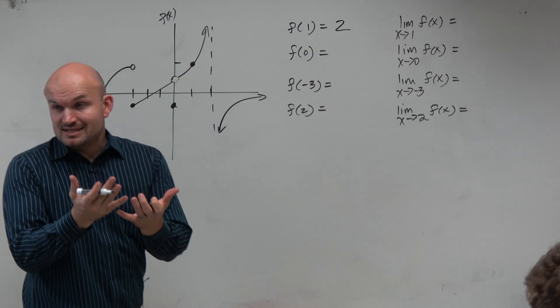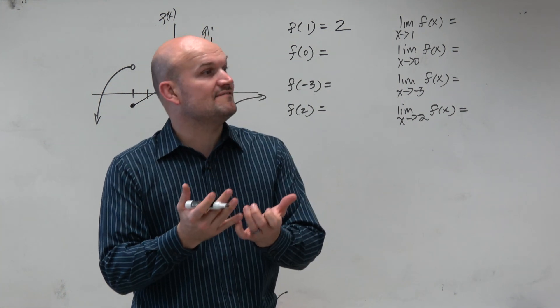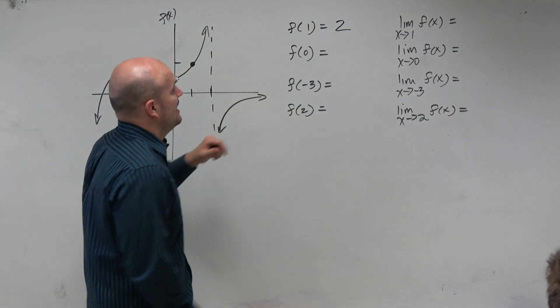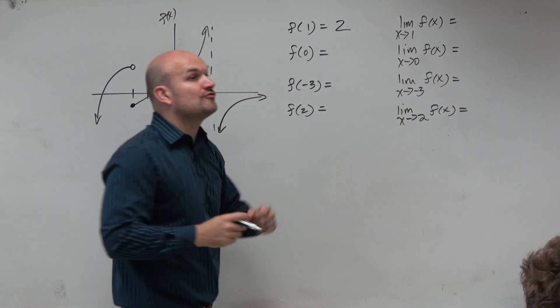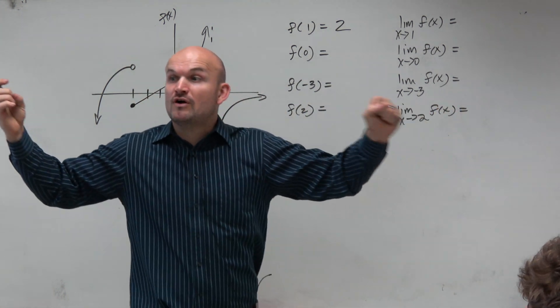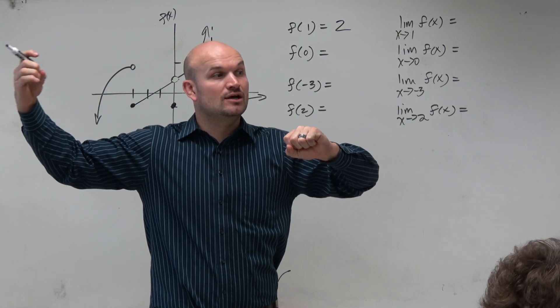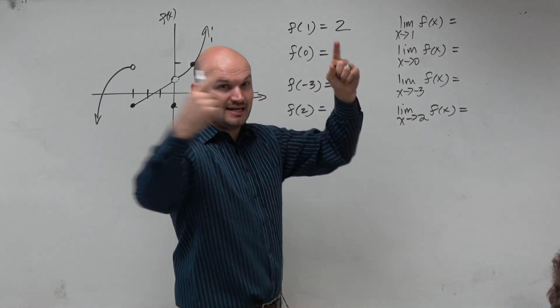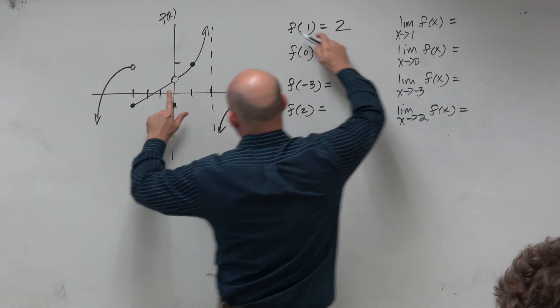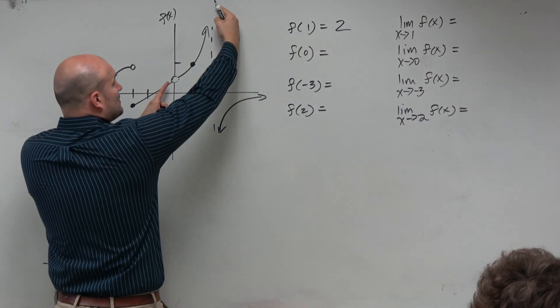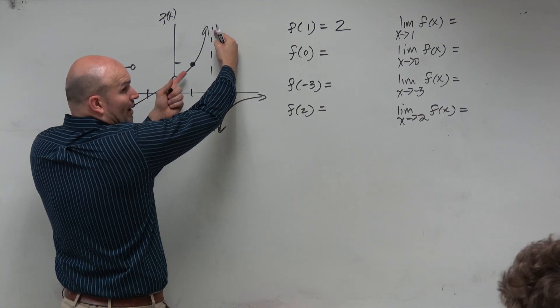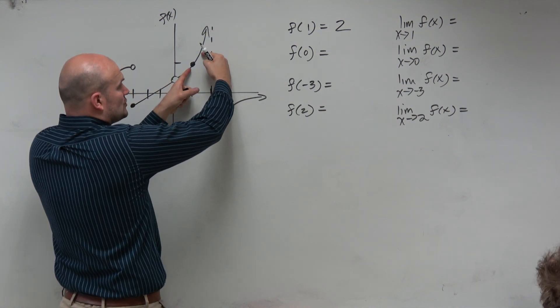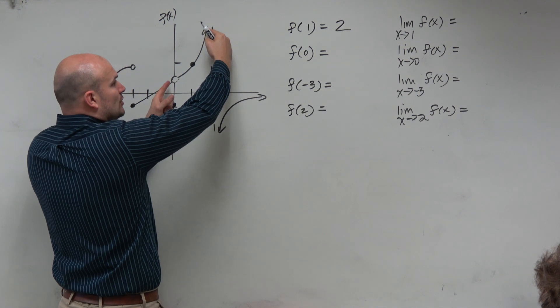Now the limit is something different. The limit is saying, what is the value approaching as x gets closer to 1 from the left? Remember the table? From the left as well as from the right. So you can basically kind of take your two fingers and squeeze the graph and say, from the left and from the right, what y value, or f of x value, am I getting closer and closer to? Or am I approaching?